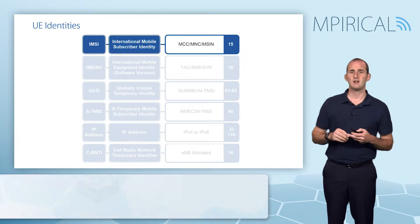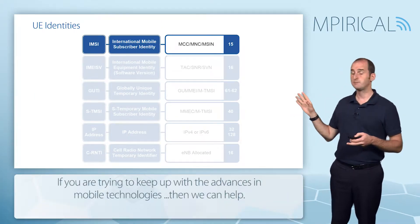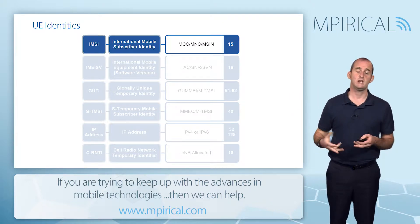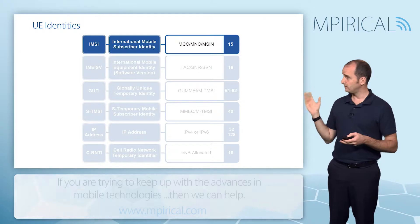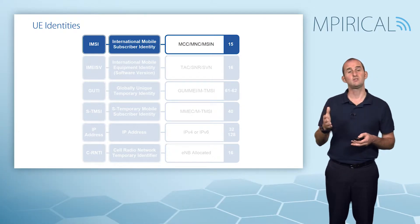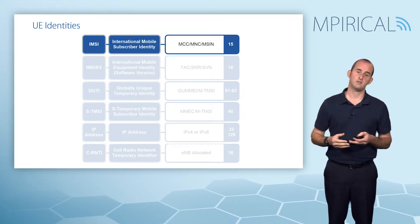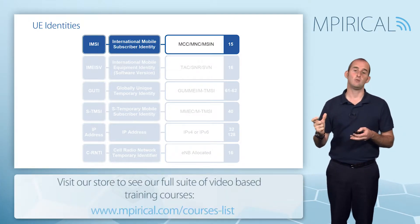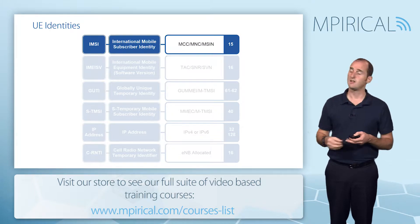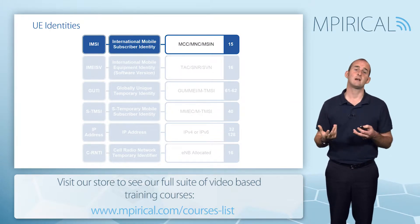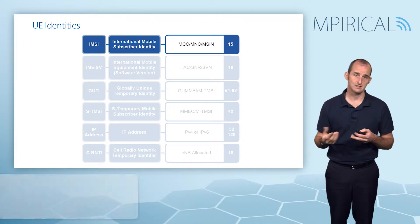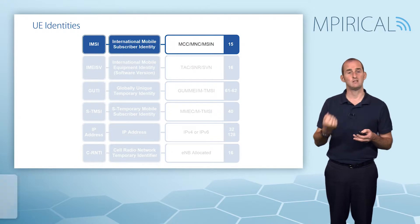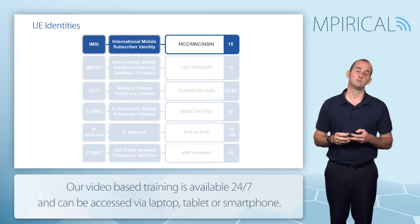Starting off with the mobile device itself, or more specifically the subscriber, their IMSI. Just like in 2G and 3G networks, in LTE the IMSI is used as the subscriber reference. When you see the subscriber being identified in the core network in certain elements of signaling, it's the IMSI that's used — a good example being on the S6A interface between the MME and the HSS.